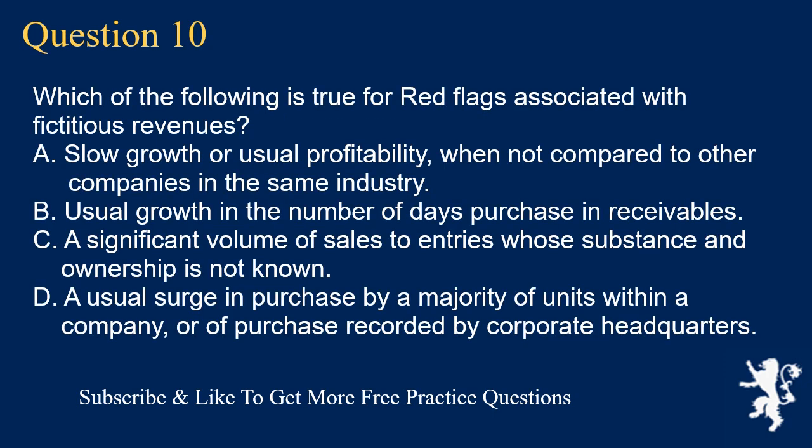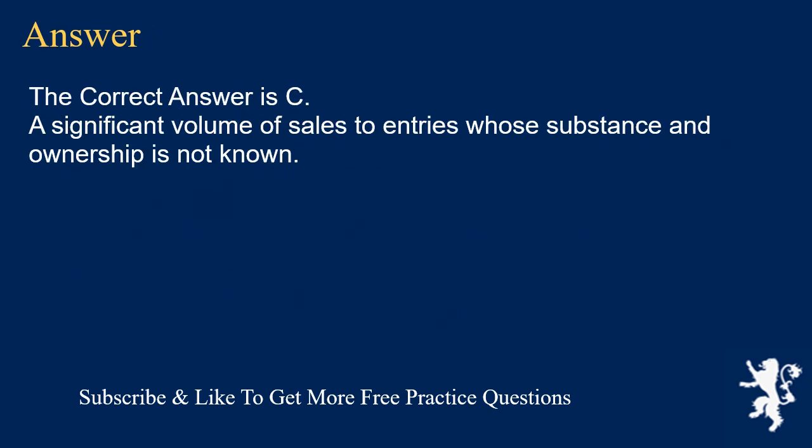Question 10: Which of the following is true for red flags associated with fictitious revenues? A. Slow growth or unusual profitability, when not compared to other companies in the same industry. B. Unusual growth in the number of days purchase and receivables. C. A significant volume of sales to entities whose substance and ownership is not known. D. An unusual surge in purchases by a majority of units within a company, or purchases recorded by corporate headquarters. The correct answer is C.